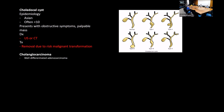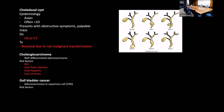Cholangiocarcinoma is a well-differentiated adenocarcinoma with risk factors including PSC, liver fluke infection, viral hepatitis, and liver cirrhosis. Gallbladder cancer can be adenocarcinoma or squamous cell carcinoma, and risk factors include any form of chronic inflammation.